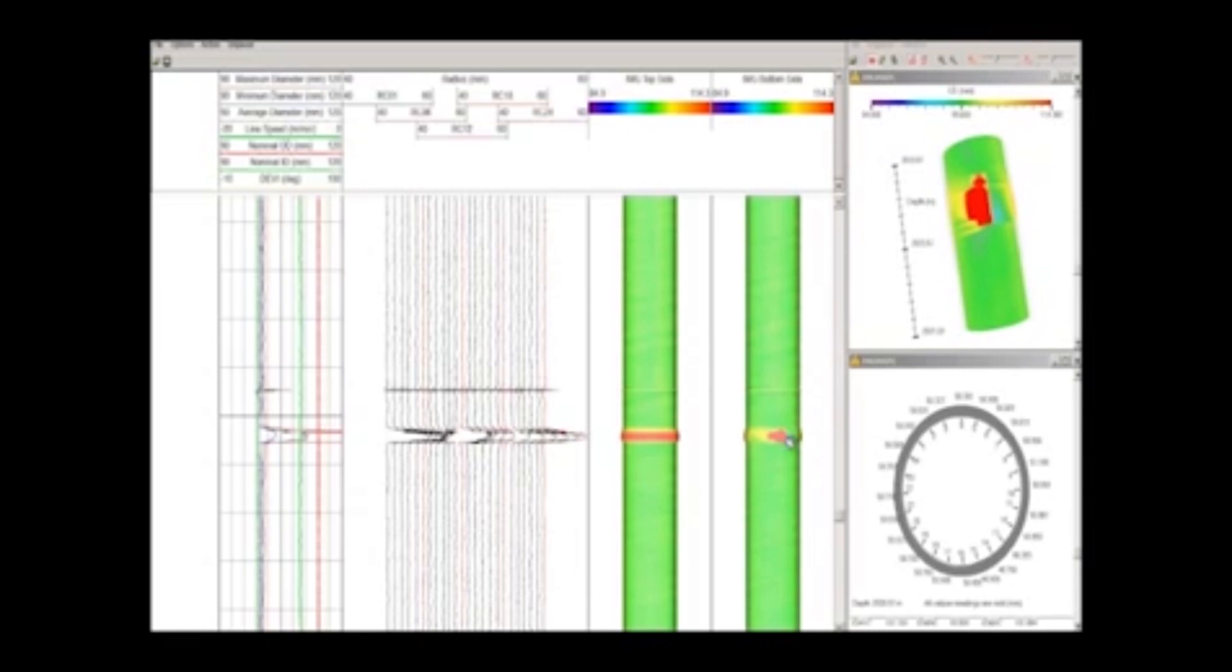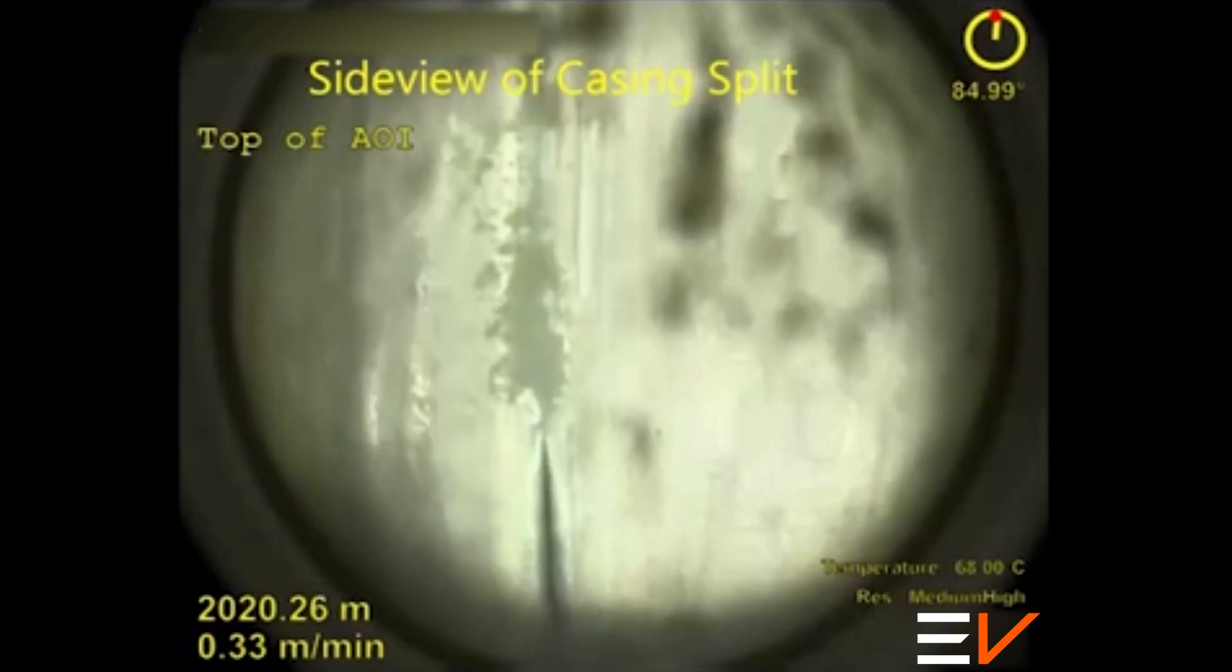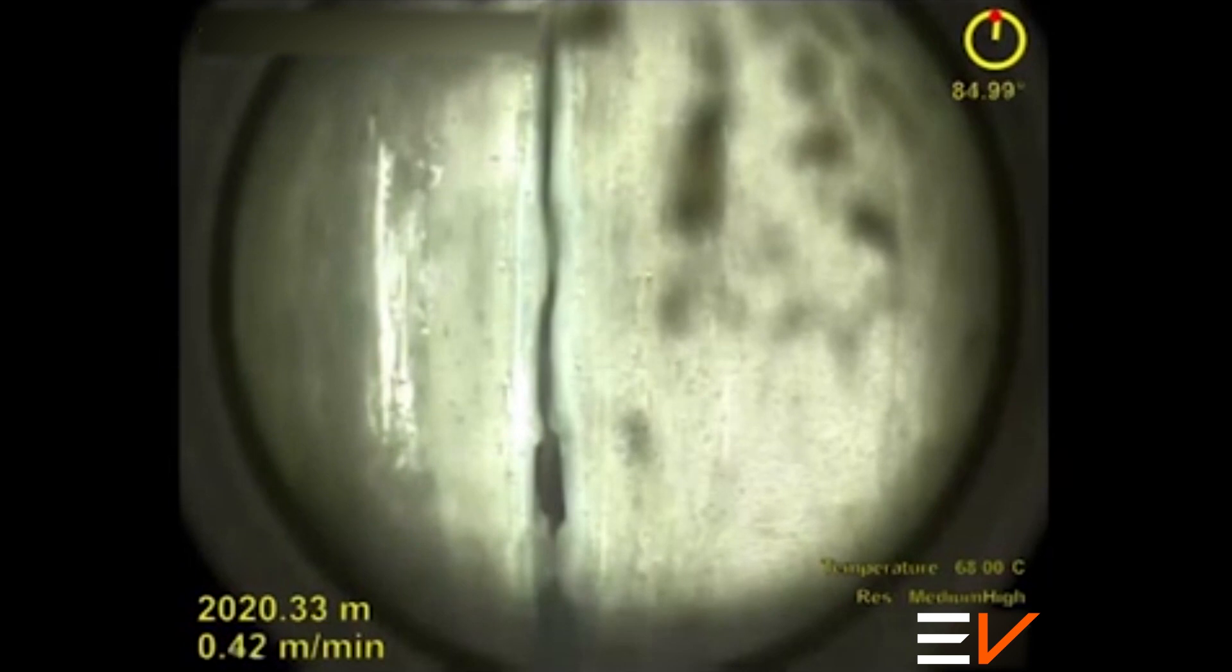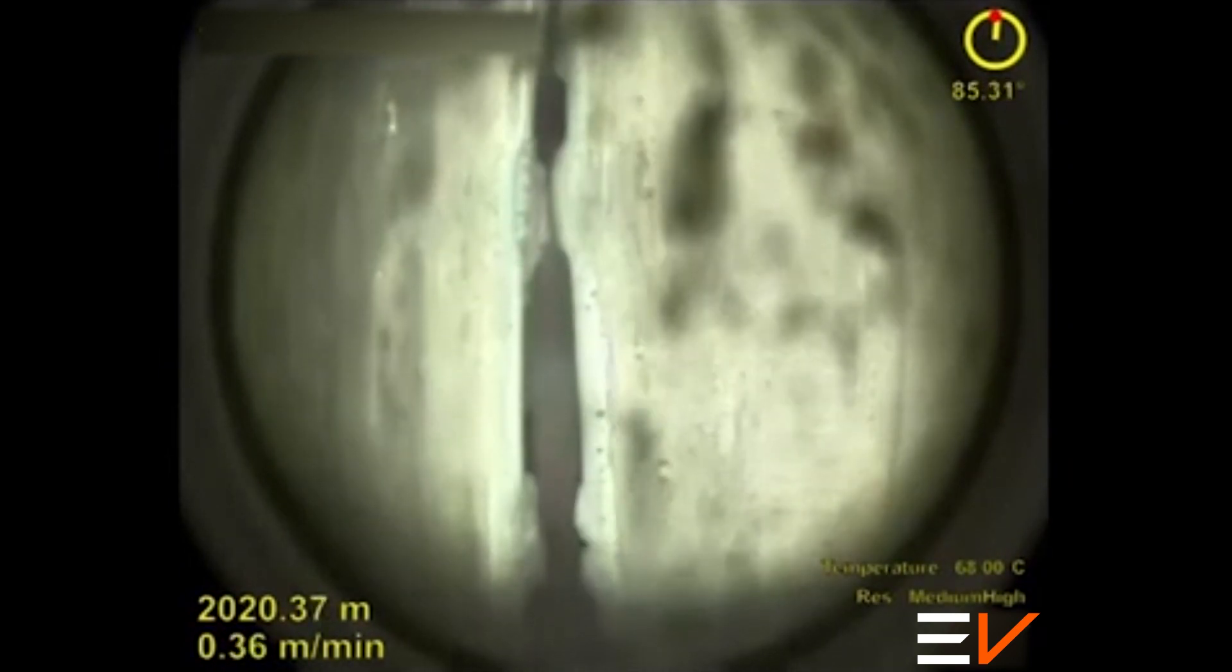The caliper clearly indicates a feature, but given that this is a P110 casing, a split might be thought unlikely. With the ability to drop down and inspect the feature in detail using the HD e-line camera, there is no doubt about the issue.